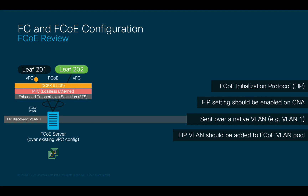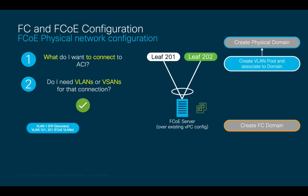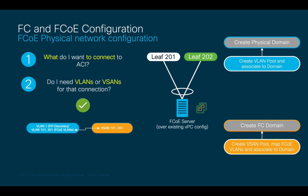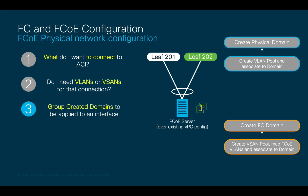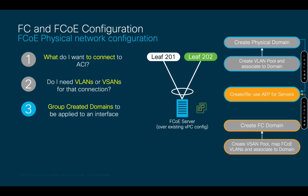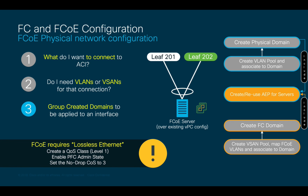Now that we remember how FCoE works and have checked the settings on our UCS server running VMware ESX, we can move on to the VSAN pool. I already have VSANs 101 and 201 defined in a VSAN pool associated to my Fiber Channel domain. So I will only need to map the corresponding FCoE VLANs to it. Then, on step 3, I will add both the Fiber Channel and physical domains to our existing 'servers' AEP. Before we start configuring, remember that FCoE relies on lossless Ethernet — so we will also need to enable Priority Flow Control on a QoS class, setting no-drop to a specific class of service, in our case CoS 3.